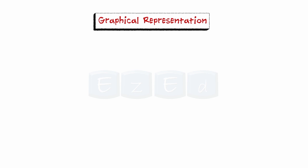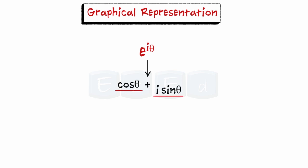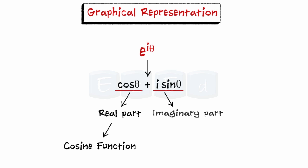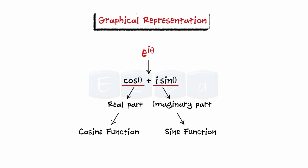The graphical representation of e^(iθ) clearly shows the relation to the trigonometric functions. The real part of e^(iθ) is cosine and the imaginary part is sine, with a period of 2π radians.